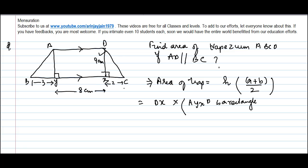And if that be the case, then this will become DX into, so AD will be equal to YX is equal to 8 cm into 8 plus B. B is what? The length of the other side, which is BC.